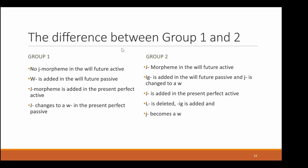In total, here is the difference between group one and two. In group one, no J morpheme is added in the real future active, but in the real future passive a W is added. A J morpheme is added in the present perfect active, and in the present perfect passive the J changes to a W. In comparison, in group two, a J morpheme is added in the real future active, and an IG is added in the real future passive with J changed to W. The J is also added in the present perfect active — same as group one — but the L is deleted, IG is added, and the J becomes a W.